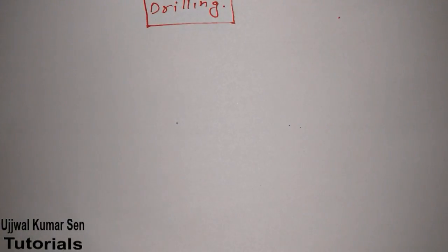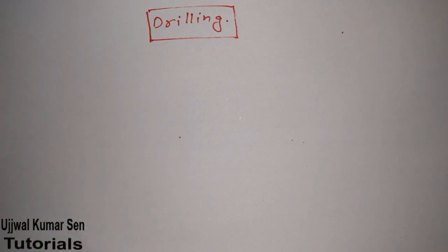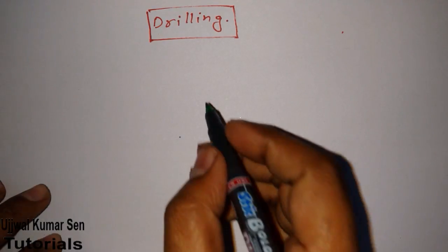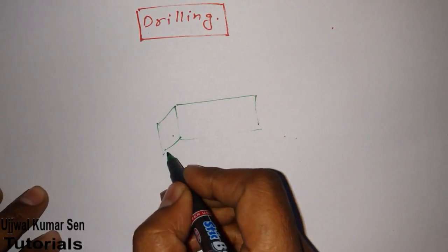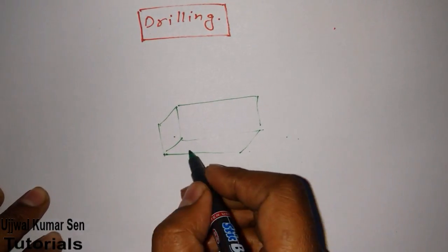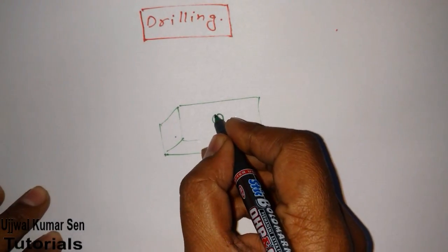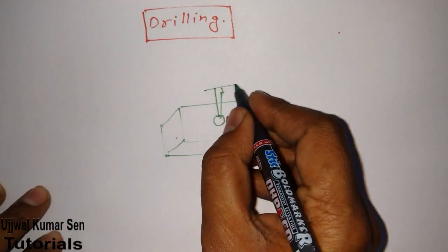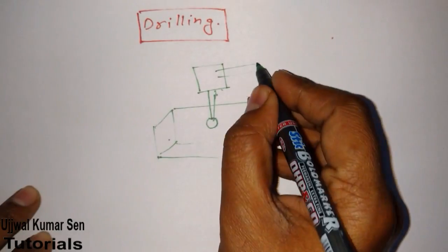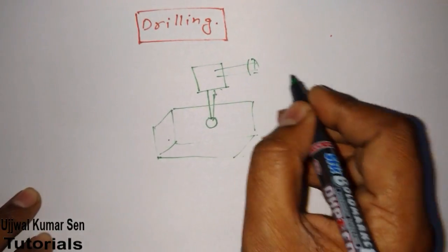This is Ujjal Kumar Sen and in this video tutorial you are going to learn about drilling. Drilling is basically used for creating holes on any sheet metal or material — in home appliances, for example. We use a drill tip, drill tool, and drill machine all connected together.